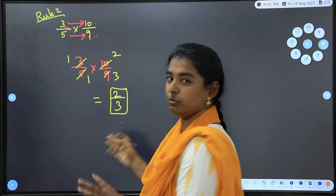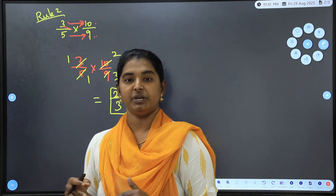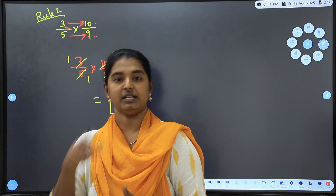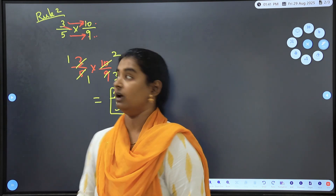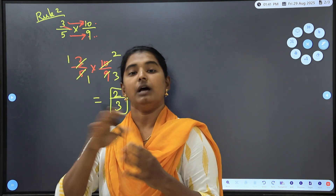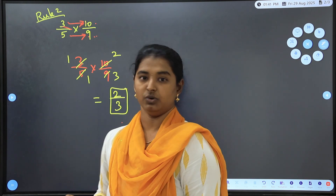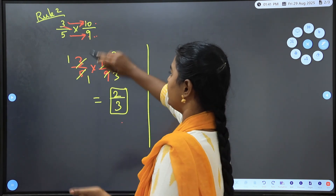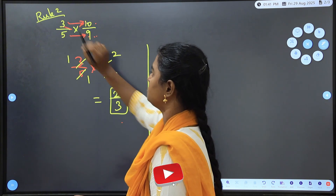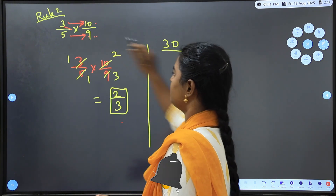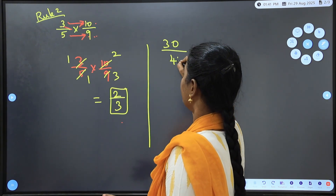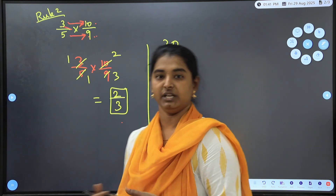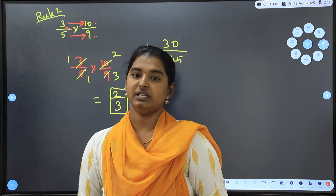For the multiplication rule, check if numerator and denominator can cancel — either directly or cross-cancel. If you cannot cancel, you can multiply first: 3×10=30 divided by 5×9=45, then simplify. Cancellation before multiplying is simpler.